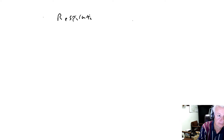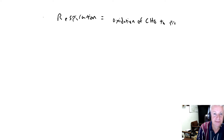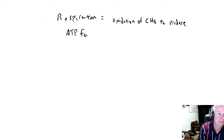In this first part of the lecture on respiration, we're going to talk in general about what respiration is and what its function is. We'll talk about different categories of respiration, and how we categorize the use of ATP from respiration for different tree processes. Respiration is just the oxidation of carbohydrates to produce ATP for use in other processes.